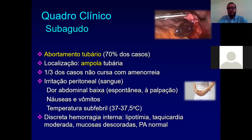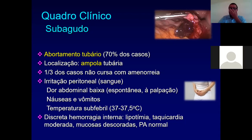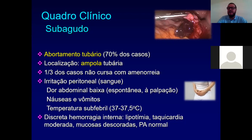Sugeri laparotomia. Na laparotomia, ela tinha uma gravidez na fímbria, onde estava abortando e sangrando continuamente, mas a fímbria estava comprometida. Fizemos uma salpingectomia. Ela tinha em torno de dois litros de sangue dentro da cavidade abdominal. Aspiramos, lavamos, e a paciente teve alta em 48-72 horas. O diagnóstico foi muito difícil.